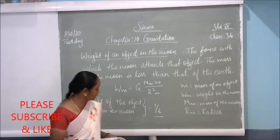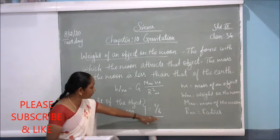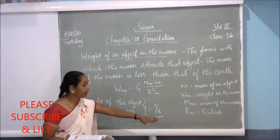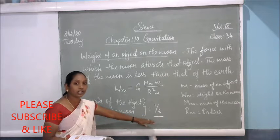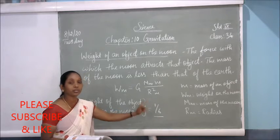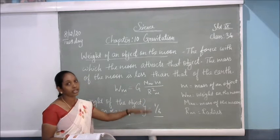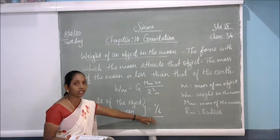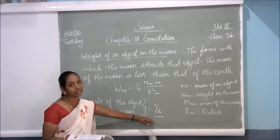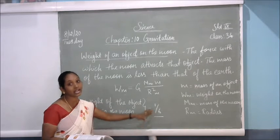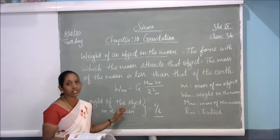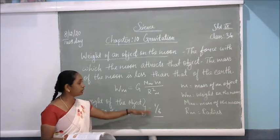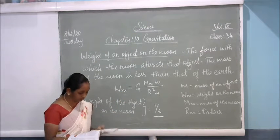So this is how much the object weighs on earth — compared to that, there is only 1/6 the weight on the moon. Because the gravitational force is very much lesser on the moon compared to the earth.